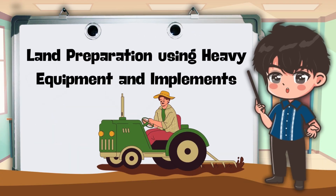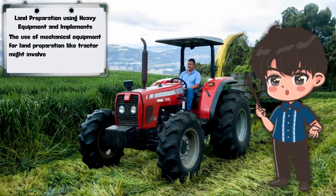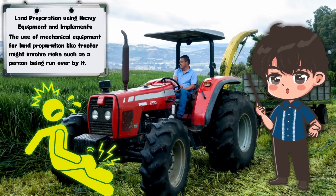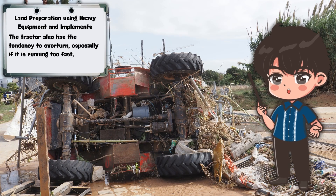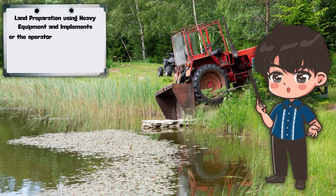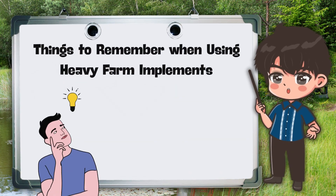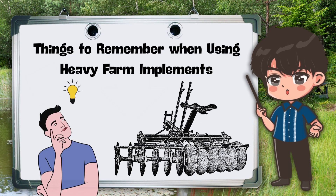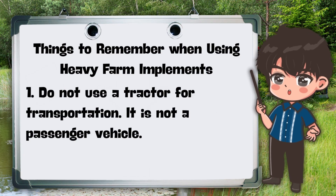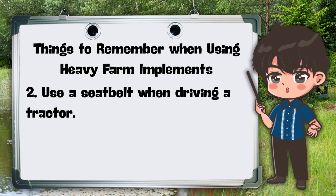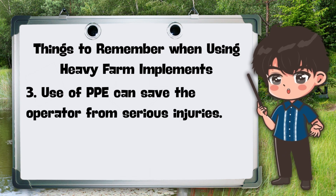Land preparation using heavy equipment and implements. The use of mechanical equipment like a tractor might involve risks such as a person being run over, or the tractor overturning, especially if running too fast, or if the operator makes a sharp turn, sudden swerve, or sudden stop. Important reminders: do not use a tractor for transportation — it is not a passenger vehicle; use a seatbelt when driving a tractor; use of PPE can save the operator from serious injuries.